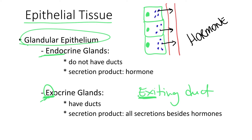Exocrine glands, which are the ones that have exiting ducts, do not produce hormones. They produce all other secretions besides hormones. So we are talking about sweat, earwax, saliva, mucus — everything that's not a hormone will be produced by an exocrine gland.